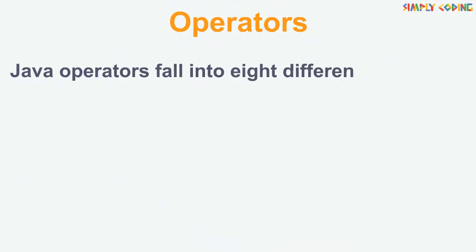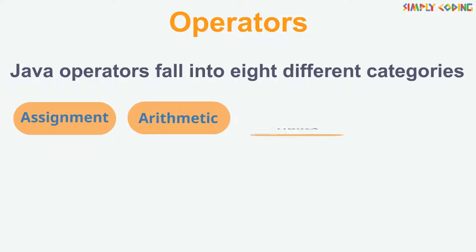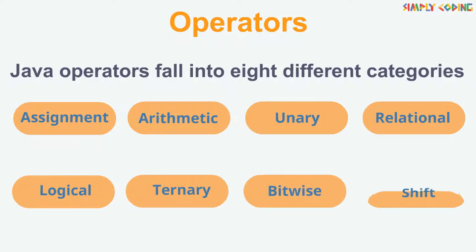Java operators can also be divided into eight different categories: Assignment, arithmetic, unary, relational, logical, ternary, bitwise, and shift. Let's look at each one of them.